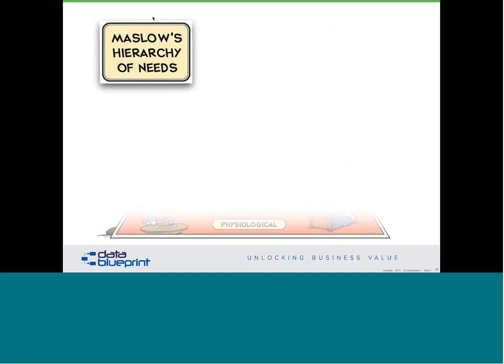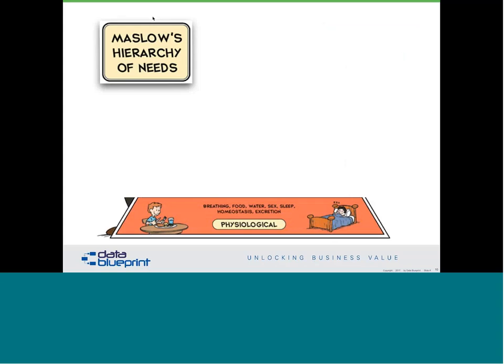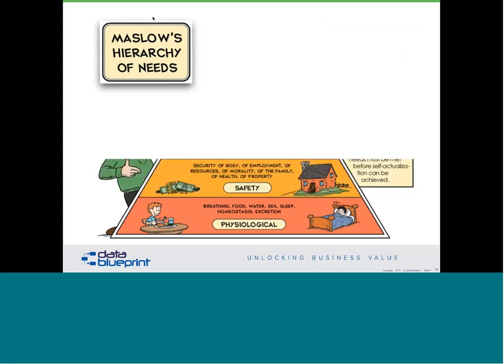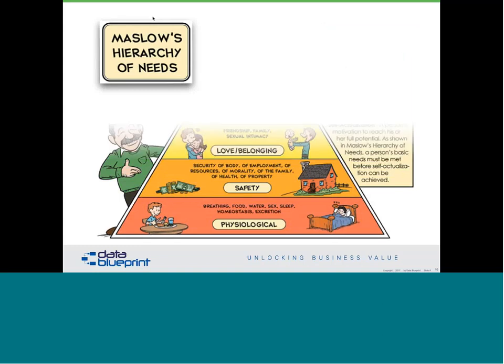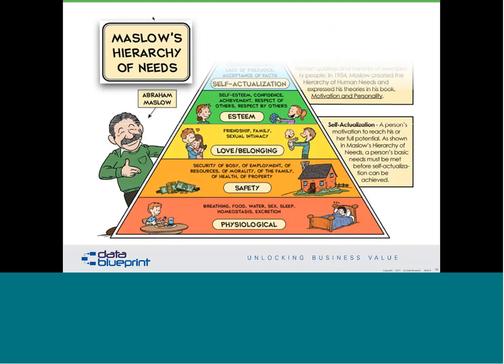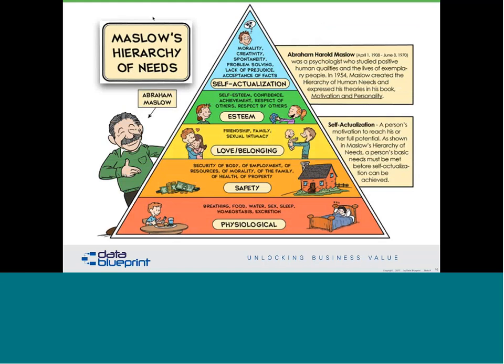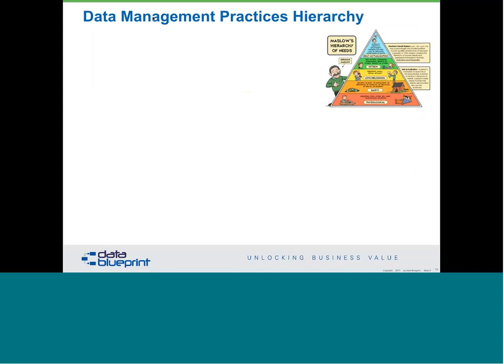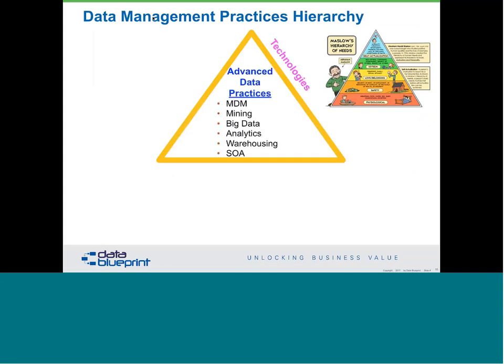As usual, we start out with Maslow. Everybody remembers from high school that if your food, clothing, and shelter needs are unmet, then you will not be safe. And if you are not safe, then you can never belong to a group or be in love. You have to have love and belonging before you get to esteem. These are all necessary but insufficient prerequisites to getting to self-actualization. Data is very much like that, and we've been working on this for many years trying to get people to buy into this.